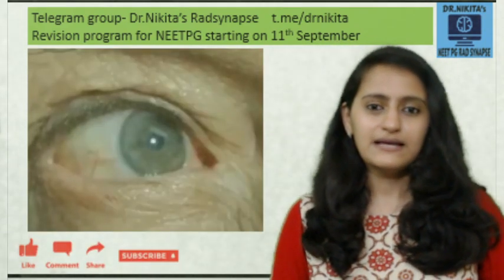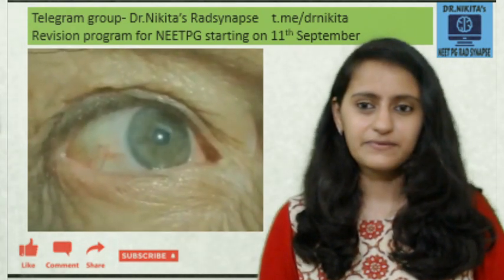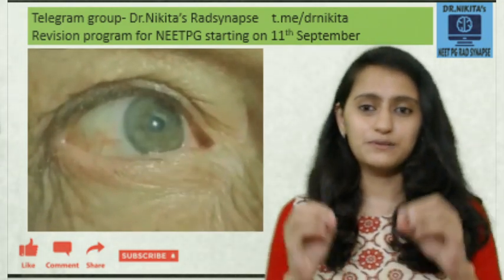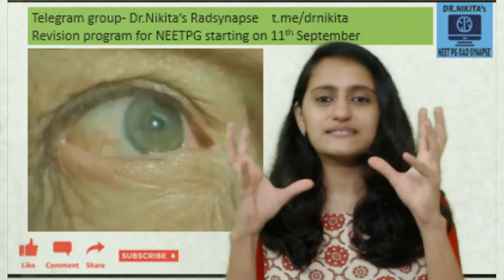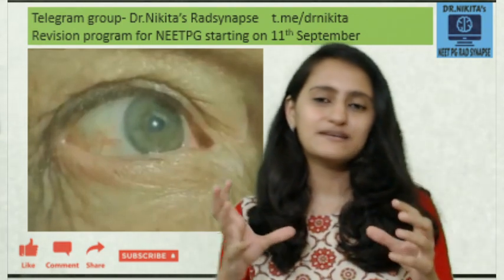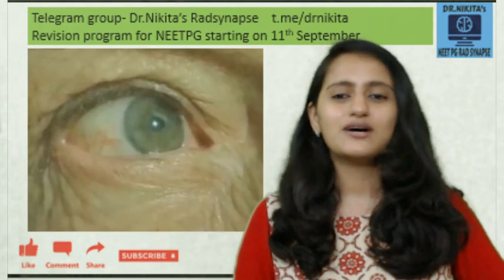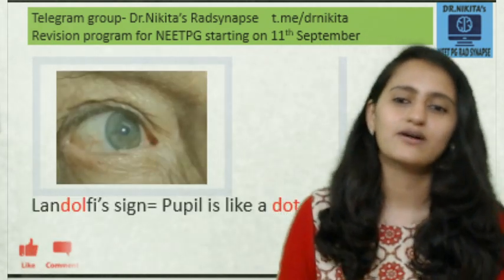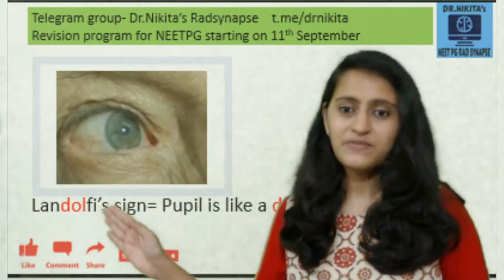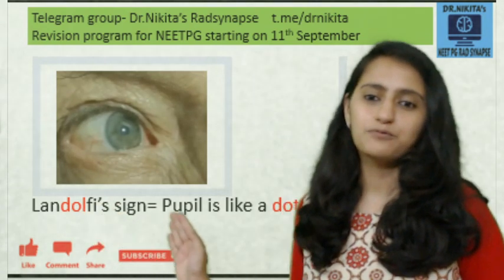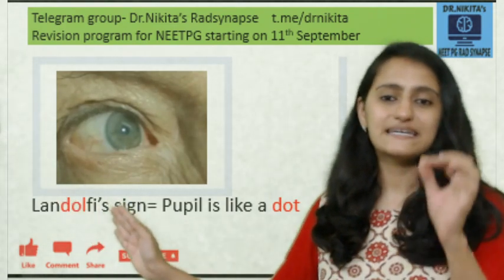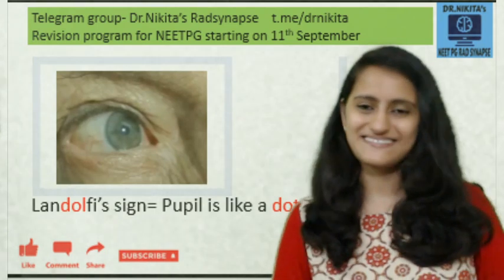Next, look at this video — concentrate on the pupil. It is constricting and dilating in sync with the cardiac cycle. This change in pupillary size is called the Lendolfi sign. To remember Lendolfi: the pupil is like a dot in the eye — in Lendolfi, 'dol' is 'dot.' So the pupil is like a dot — that is the Lendolfi sign.